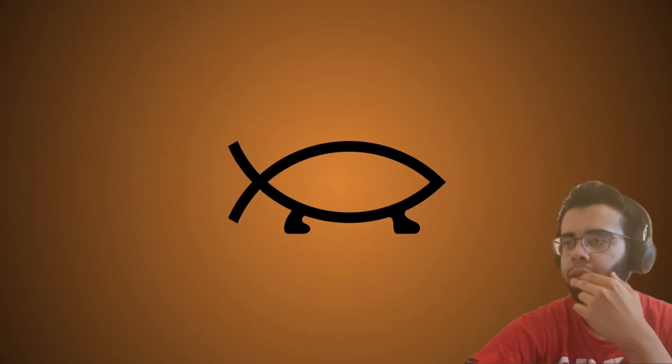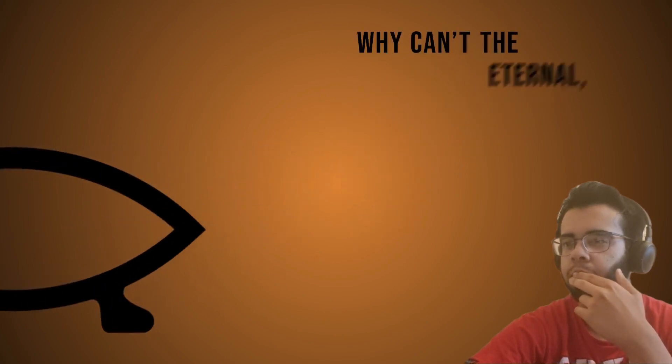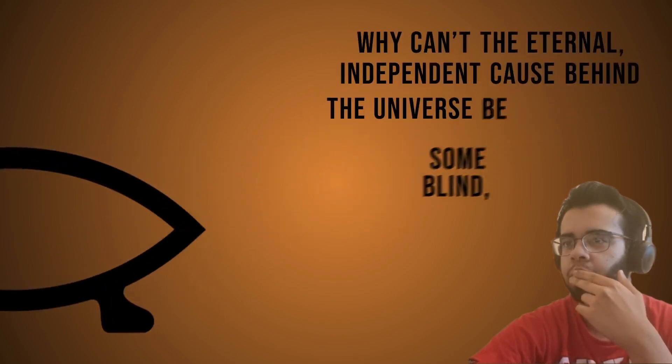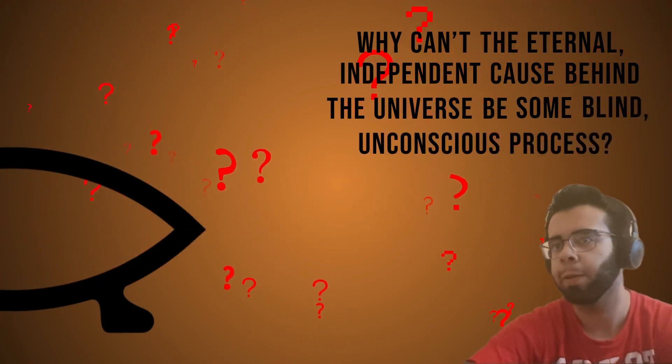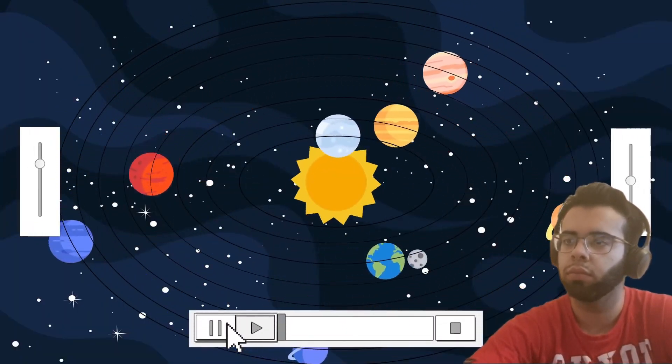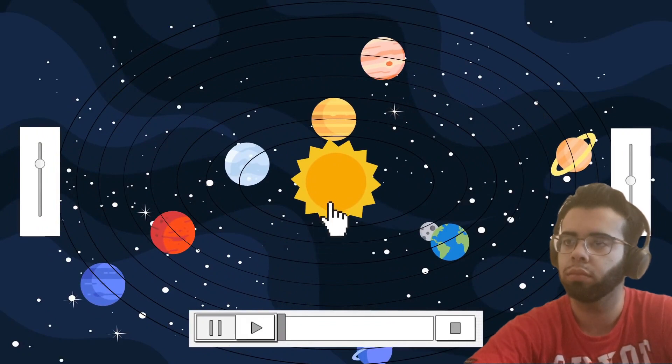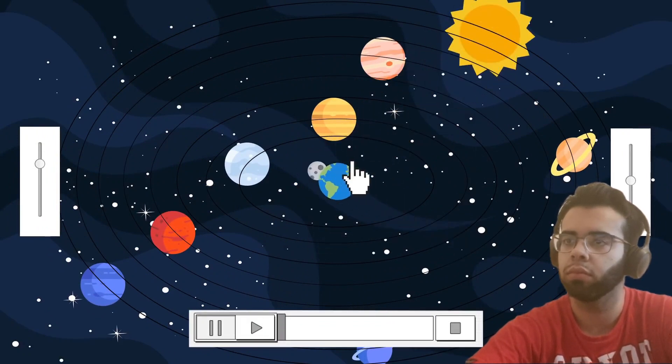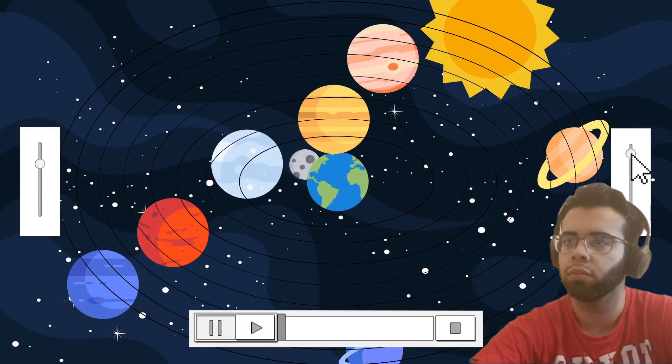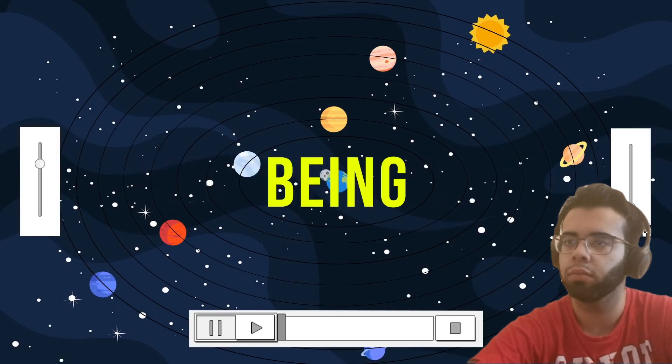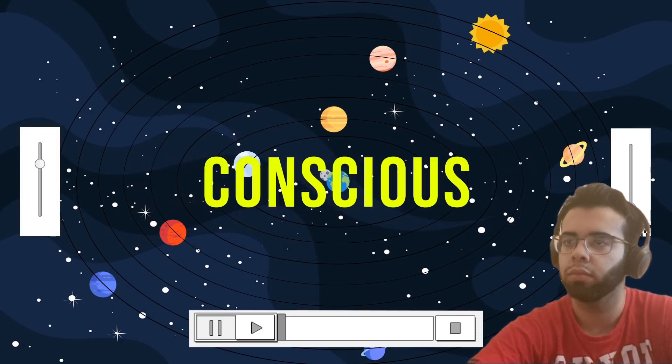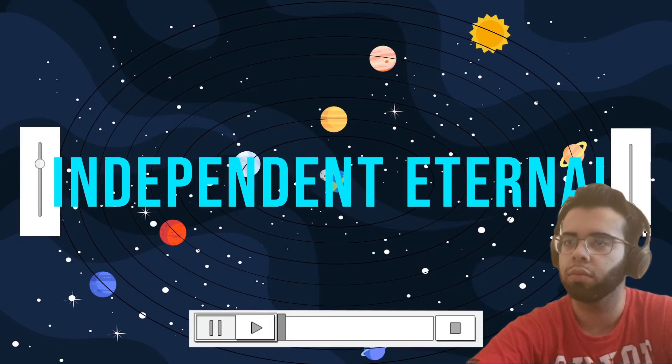One final challenge posed by atheists is to ask why can't the eternal independent cause behind the universe be some blind unconscious process? Why should anyone believe that it has a will at all? In response, simply put, since the universe could have been otherwise, then it stands to reason that a decision maker is required to determine its existence from non-existence, and decide which properties it has out of other possible properties. Their ability to choose is the characteristic of a being that has a will, and is fully conscious. This independent, eternal being that chose to create is whom we Muslims call Allah.